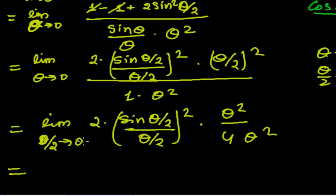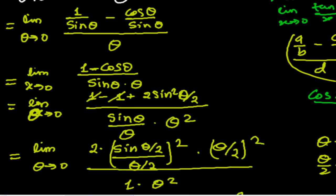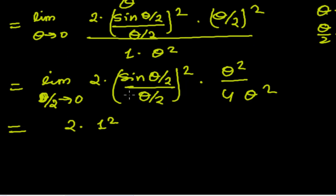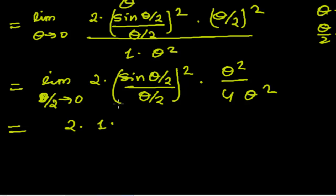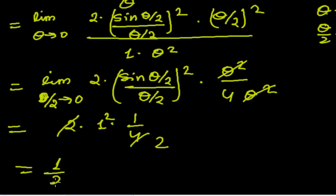When θ/2 tends to 0, sin(θ/2)/(θ/2) is the standard form and equals 1. So we get 2 times 1, times θ² divided by 4. Cancelling θ² and simplifying: 2 divided by 4 gives 1/2. This is the answer.